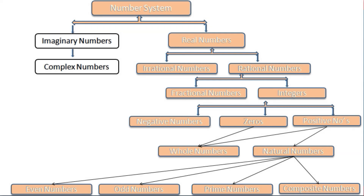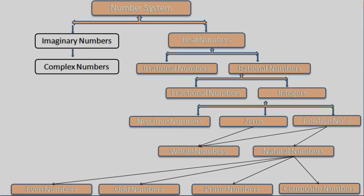This is the flowchart of the number system. Below the number system we have imaginary numbers and real numbers. Below imaginary numbers we have complex numbers. Real numbers are categorized into irrational numbers and rational numbers. From rational numbers we get fractional numbers and integers. From integers we get negative numbers, zero, and positive numbers. From positive numbers we get whole numbers and natural numbers. And from natural numbers we get even numbers, odd numbers, prime numbers, and composite numbers.